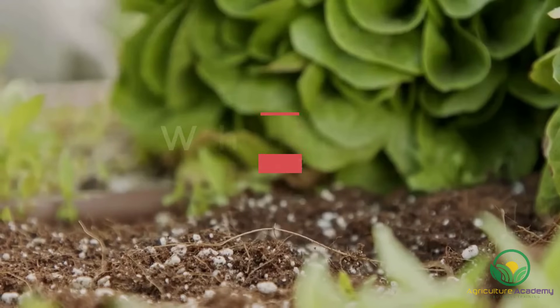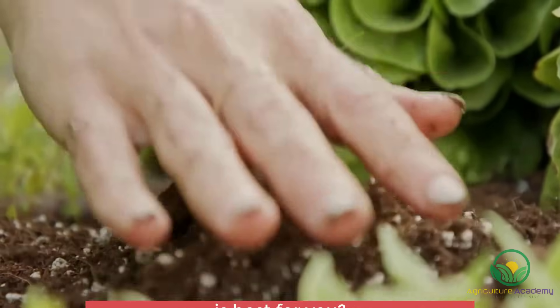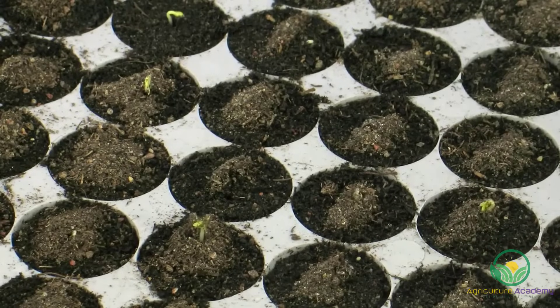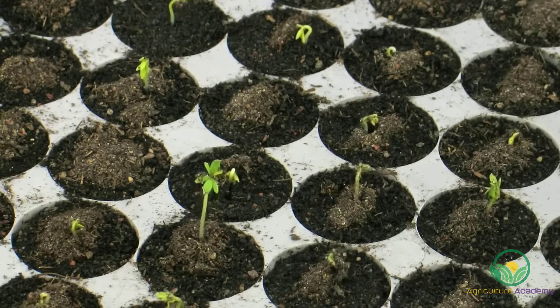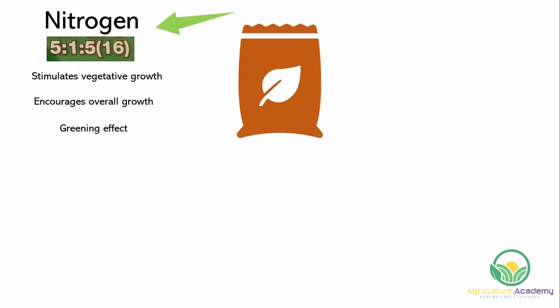So, once you know how to interpret the ratios of fertilizers, you need to know which option will suit you best. As we mentioned before, the elements will influence a plant's growth in different ways. Nitrogen stimulates vegetative growth in a plant and applications thereof will promote leaf development. Therefore, fertilizers that have a higher proportion of nitrogen will be suitable if you want to encourage overall growth in your plants. Nitrogen applications have a greening effect because nitrogen is an important constituent of chlorophyll, which makes plants green. Nitrogen deficiencies therefore commonly show as yellow leaves.